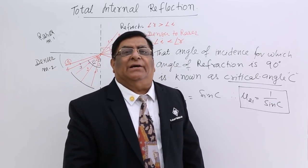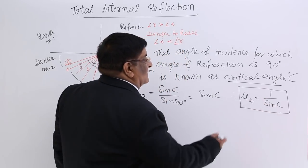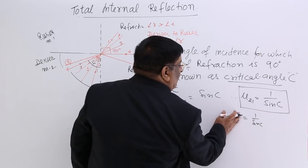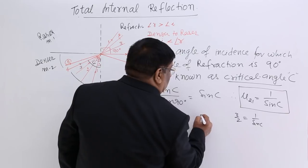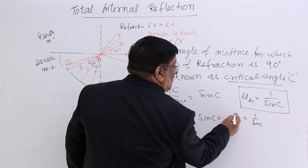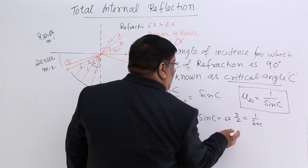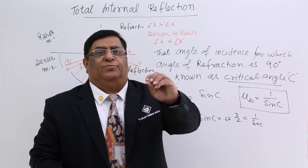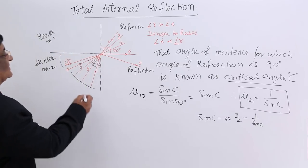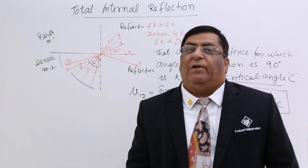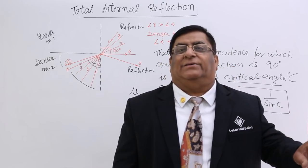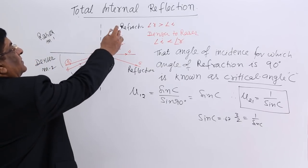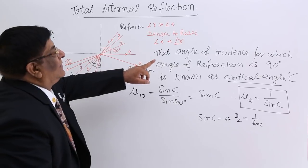If somebody asks what is the critical angle for glass: the refractive index of glass is 1.5. So 1.5 = 1 / sin C, and sin C = 2/3, which is approximately 0.67. From the table, we find that C is around 42 to 44 degrees. So if the angle of incidence is more than about 44 degrees, the light will get reflected back in the same medium and total internal reflection will take place. Below that, light will go out.